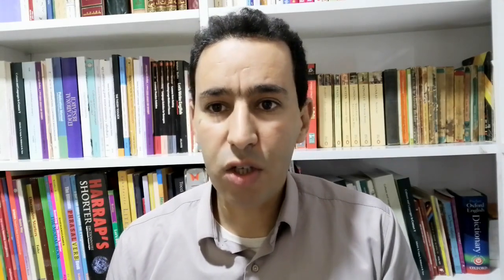Piaget calls this balance equilibration and claims that equilibration is achieved through two main processes: assimilation and accommodation. Assimilation is the process of adapting new information to fit our schemata. For instance, a child knows horses. When she sees a donkey, a mule, or even a cow, she calls it a horse. Thus, she adapts new information to fit what she already knows.